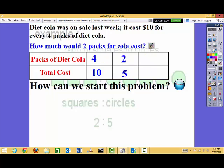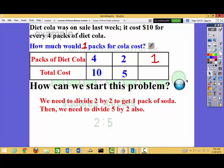So now let's go to this one. How much would 1 pack of cola cost? Well, I know 2 packs cost $5. Now I need to change it to 1. So what am I going to do? I need to divide 2 by 2 to get this 1, and then I need to do the exact same thing to this 5. I need to find half of that 5.